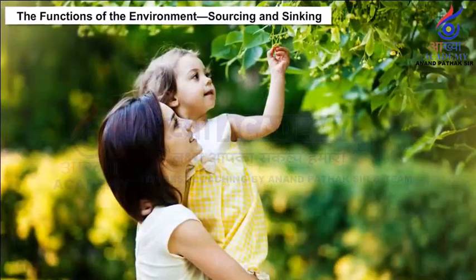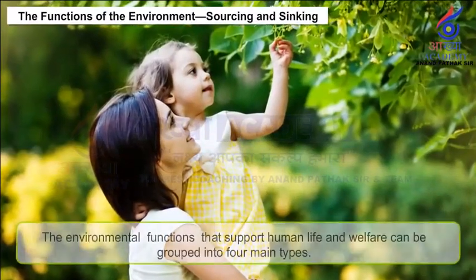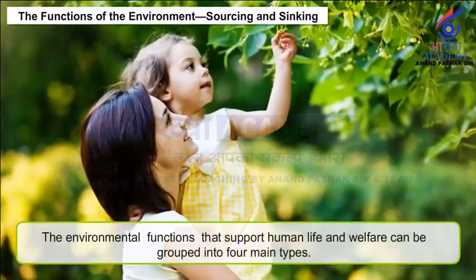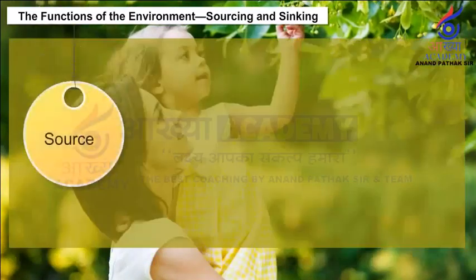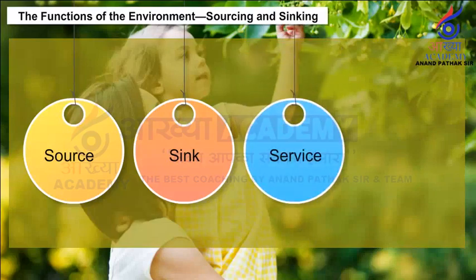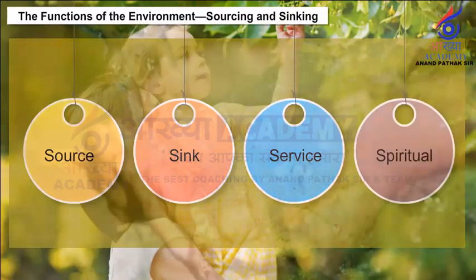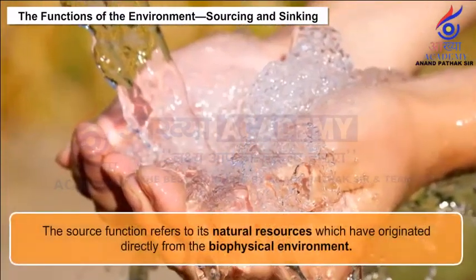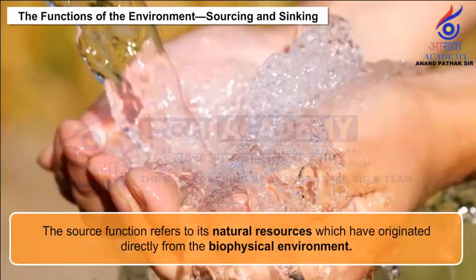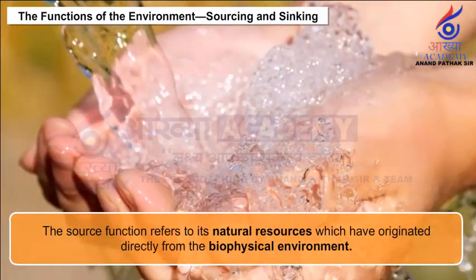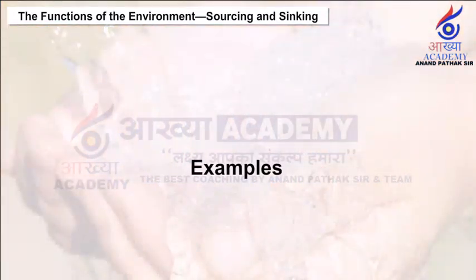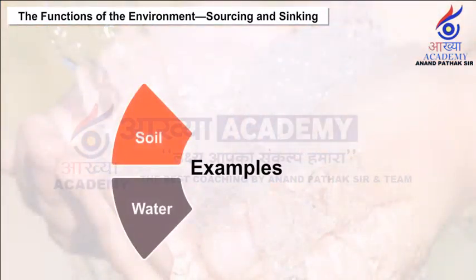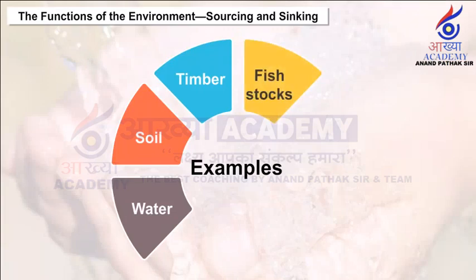Sourcing and Sinking. The environmental functions that support human life and welfare can be grouped into four main types: Source, Sink, Service and Spiritual. The source function refers to natural resources which have originated directly from the biophysical environment. Examples include water, soil, timber, fish stocks, minerals and fossil fuels.